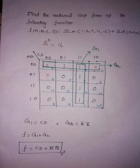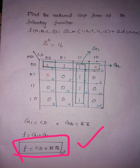Now, we have to add both the groupings. We will get the final expression as CD plus A bar B bar. This is your final expression.